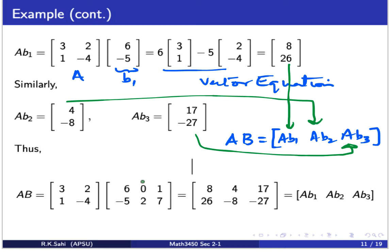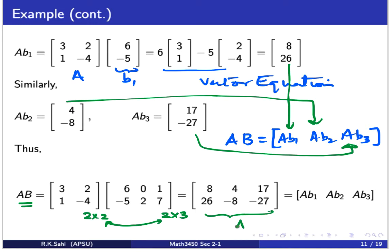Going back to what we learned earlier about multiplying two matrices: matrix multiplication is only possible if the number of columns of the first matrix equals the number of rows of the second matrix. The first element of AB comes from multiplying the first row of A with the first column of B to get 8. We can figure out all the remaining elements similarly. The result is exactly the same as we got earlier using the proper definition of matrix product. Whichever way you're more comfortable, go ahead and use that method.